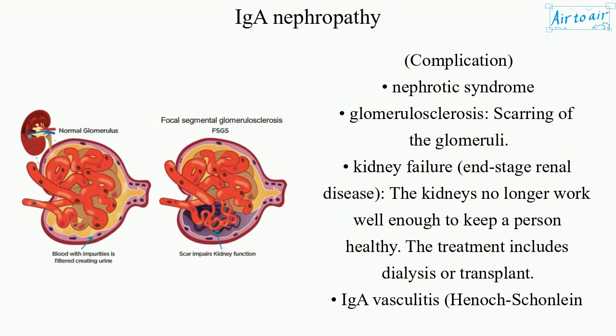Complications. Nephrotic syndrome, glomerulosclerosis — scarring of the glomeruli. Kidney failure, or end-stage renal disease, where the kidneys no longer work well enough to keep a person healthy. Treatment at that stage includes dialysis or transplant.